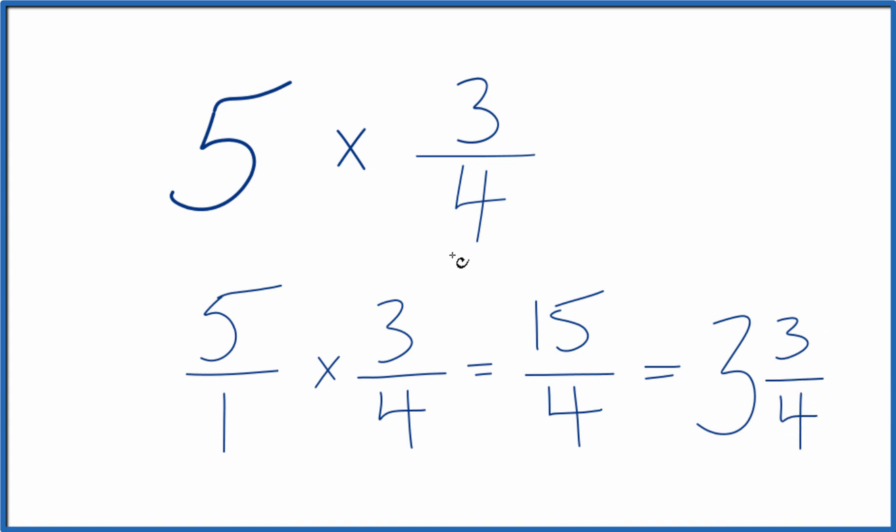So that's it. This is Dr. B multiplying 5 times 3 fourths. You get 15 fourths, or you could call that 3 and 3 fourths.